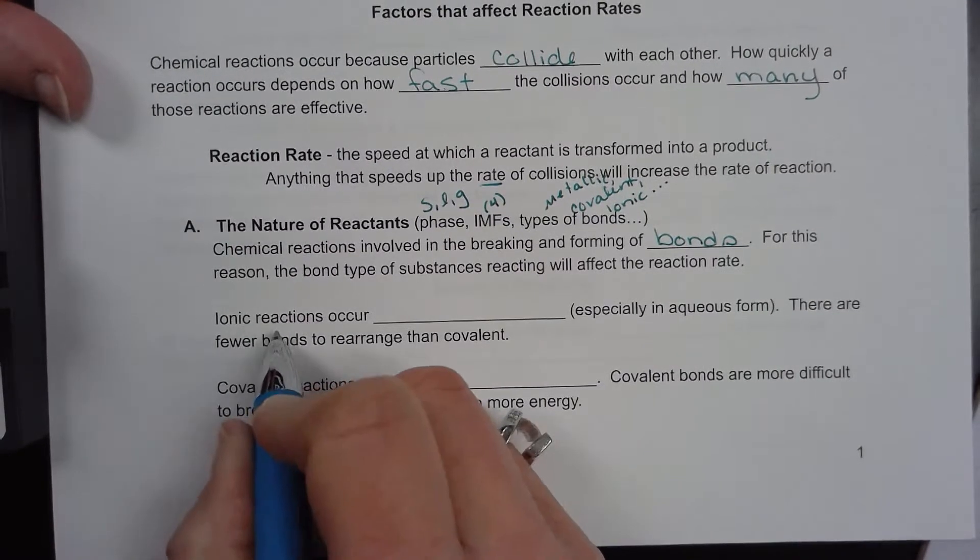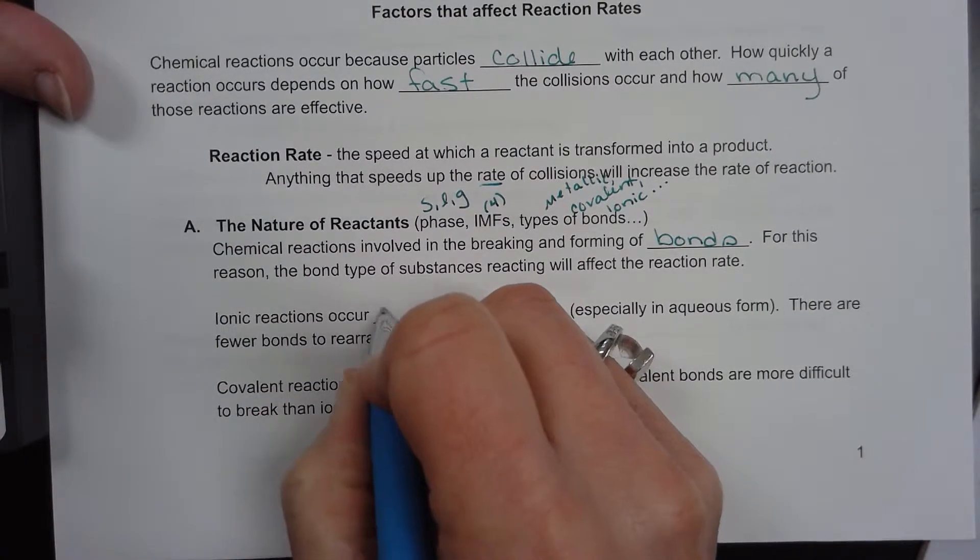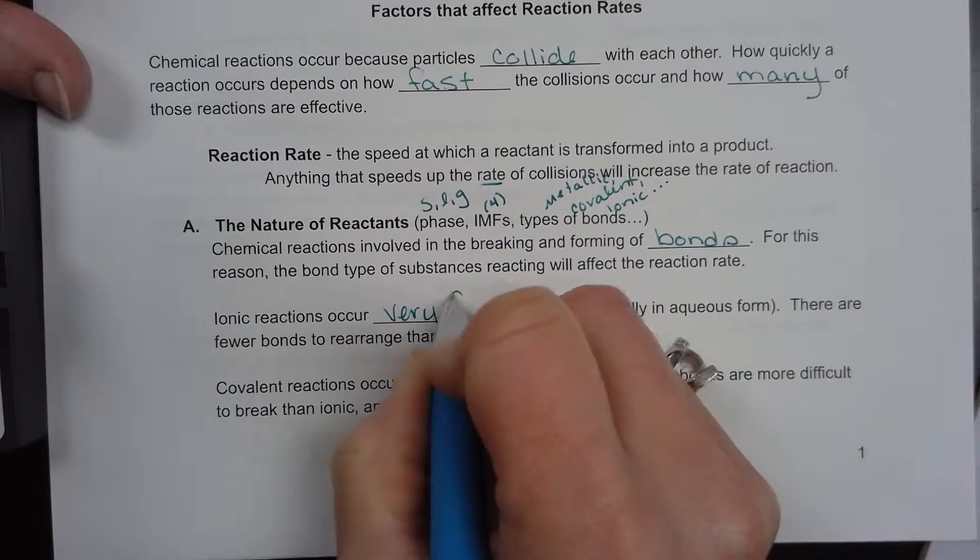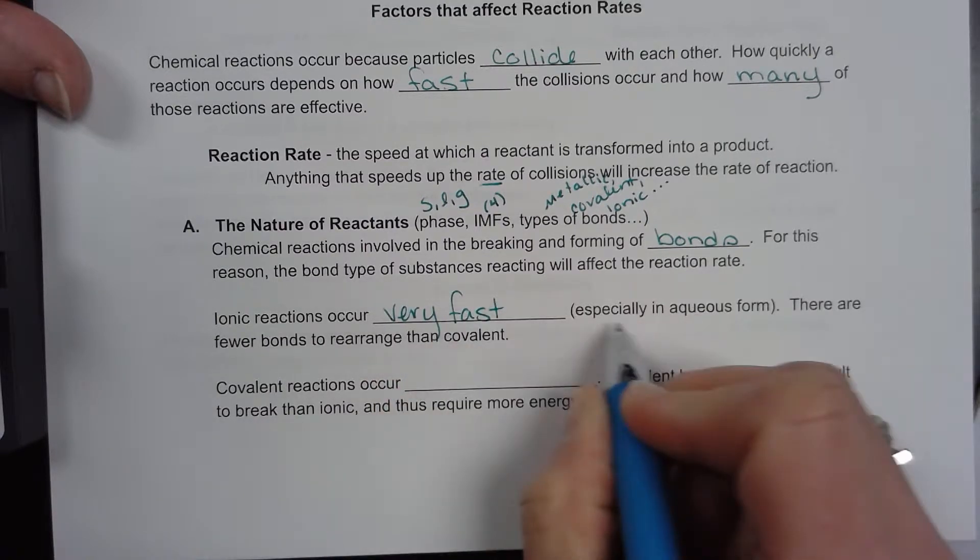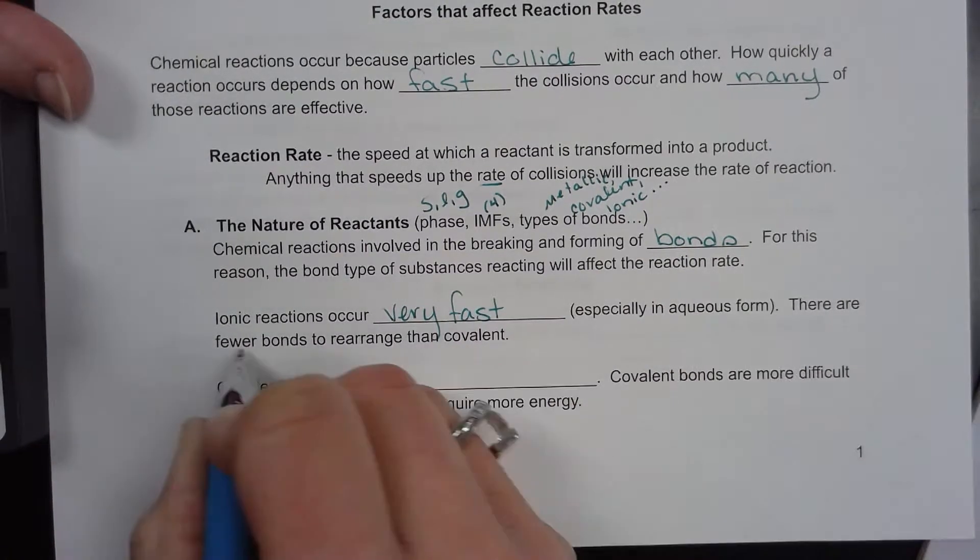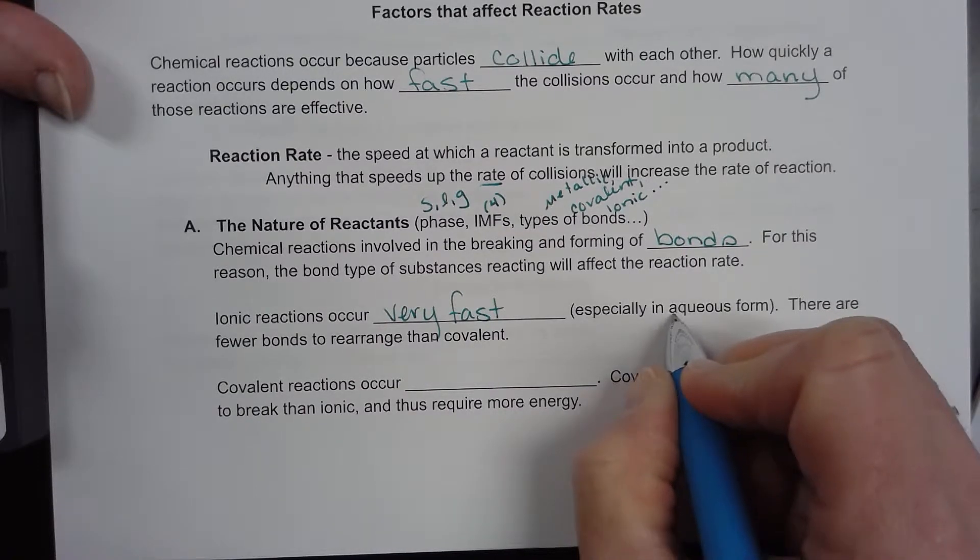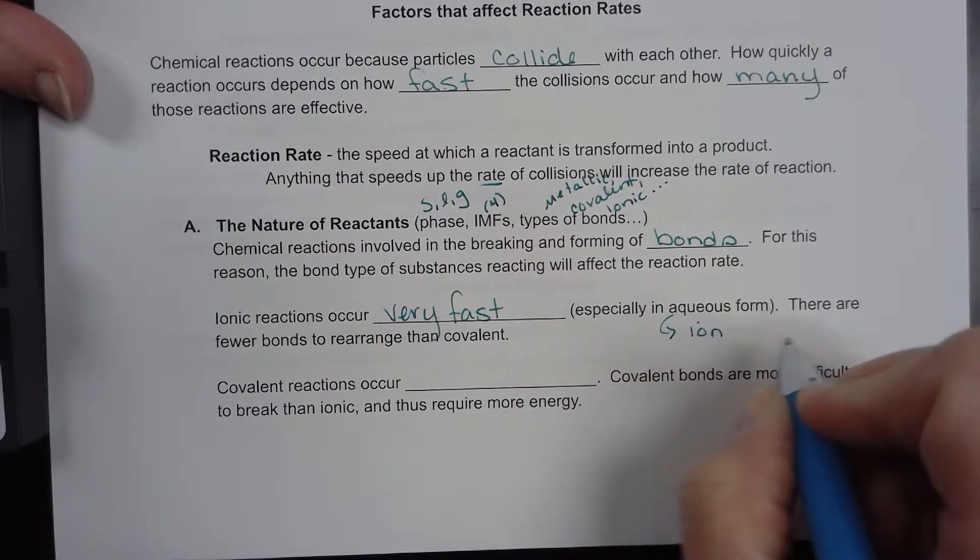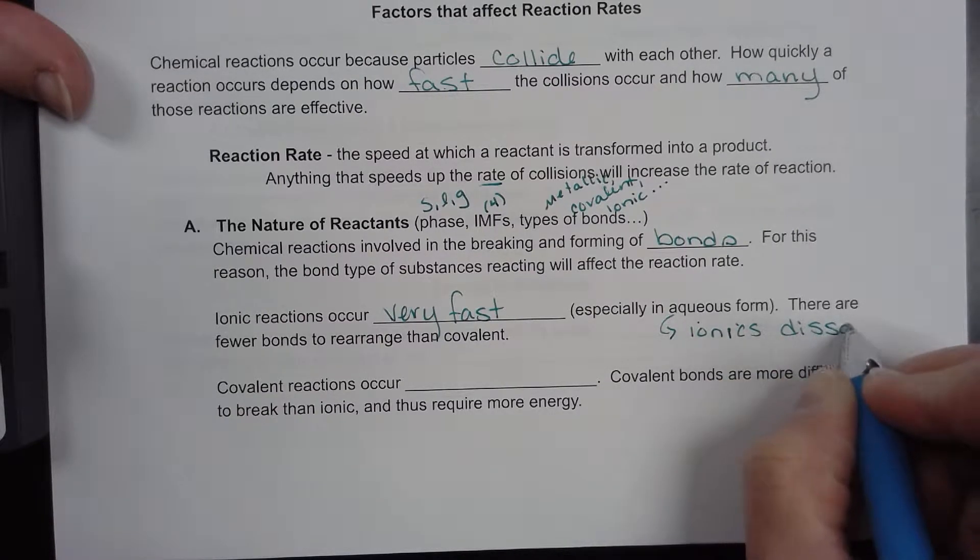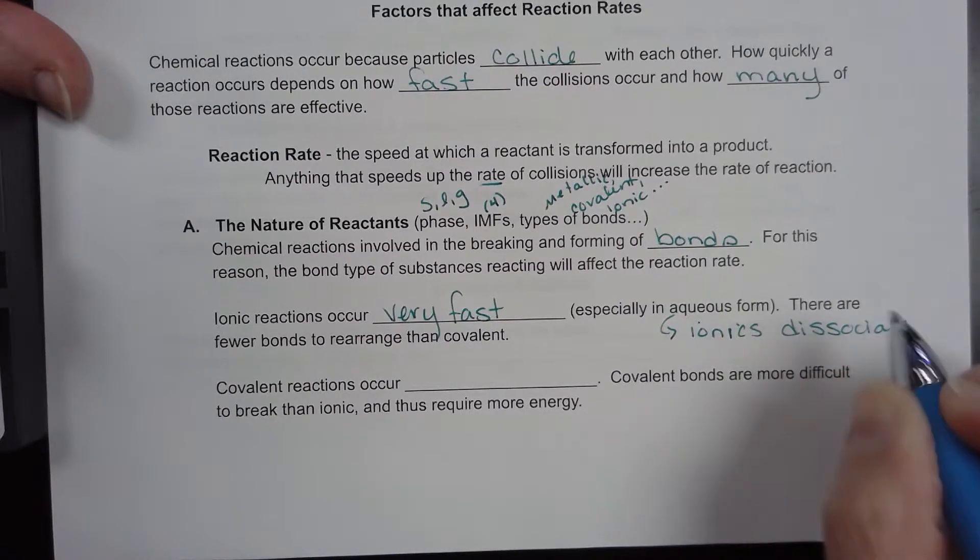Ionic reactions occur very fast, especially in aqueous form. There are fewer bonds to rearrange than covalent. Ionic compounds dissociate, which is why they go faster.